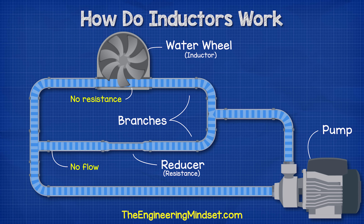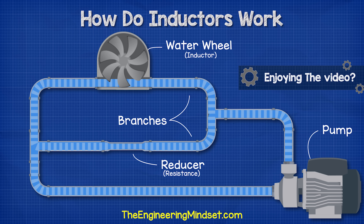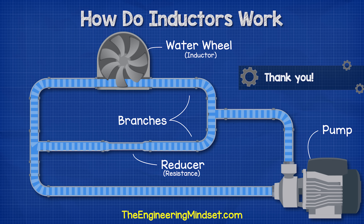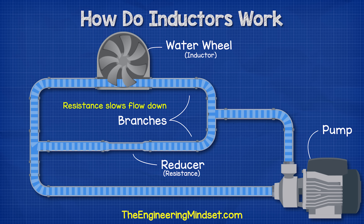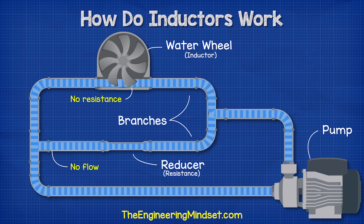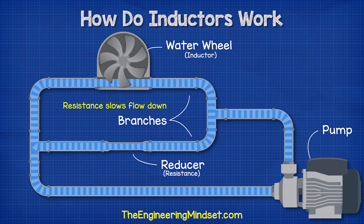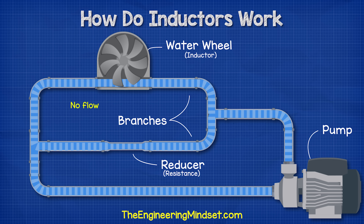When we turn off the pump, no more water will enter the system, but the water wheel is going so fast it can't just stop — it has inertia. As it keeps rotating it will now push the water and act like a pump. The water will flow around the loop back on itself until the resistance in the pipes and the reducer slows the water down enough that the wheel stops spinning. We can therefore turn the pump on and off and the water wheel will keep the water moving for a short duration during these interruptions.